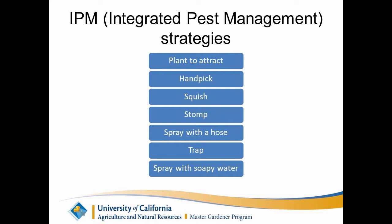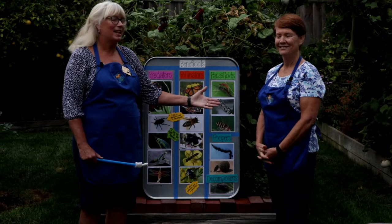The seven IPM strategies are: plant to attract, hand pick, squish, stomp, spray with a hose, trap, and spray with soapy water. Those are our objectives for you in these upcoming lessons on beneficials and pests.